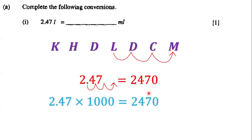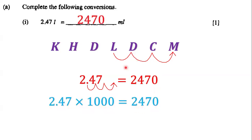Showing our working: 2.47 multiplied by 1,000 — we multiply by 1,000 because we moved over three places to the right — which gives us 2,470. That is our answer.